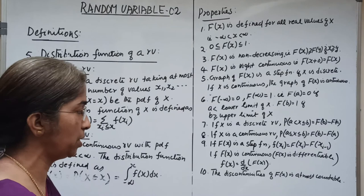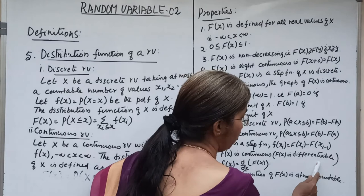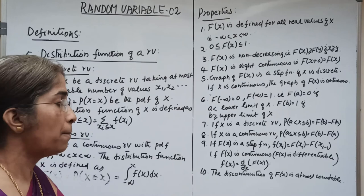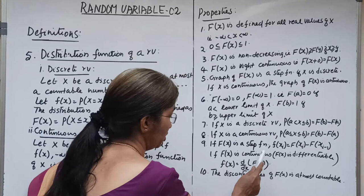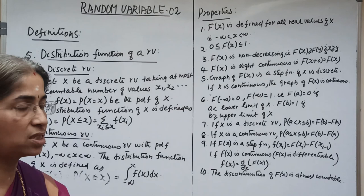If capital F(x) is continuous — that is, when capital F(x) is differentiable — small f(x) equals d/dx of capital F(x). That is, we can obtain the PDF of x by differentiating the distribution function capital F(x). The discontinuities of F(x) are at most countable.